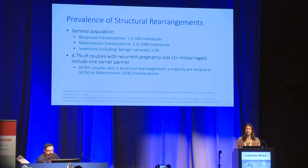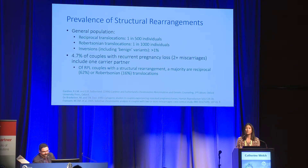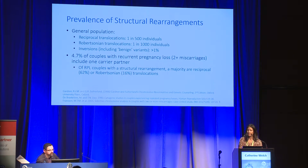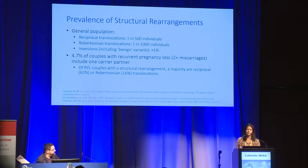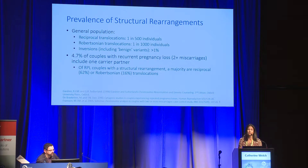Looking at the prevalence of structural rearrangements: in the general population, we see reciprocal translocations in about 1 in 500 individuals, Robertsonian translocations in about 1 in 1,000 individuals, and inversions — including benign variants — in about 1%. There are many known normal variants of inversions that don't seem to have any reproductive effects and thus don't require PGTSR. About 4.7% of couples with recurrent pregnancy loss, defined as two or more miscarriages, include at least one carrier partner, and a majority of those involve reciprocal or Robertsonian translocations.